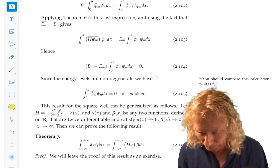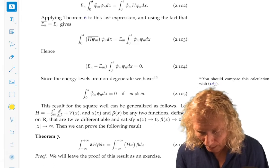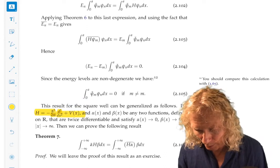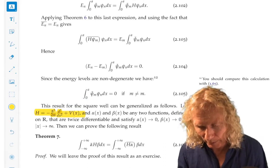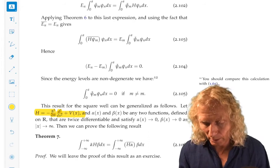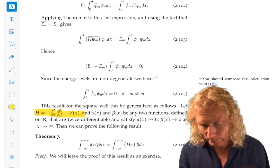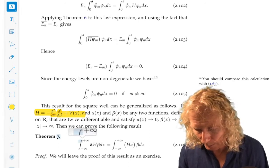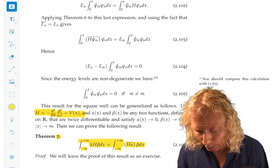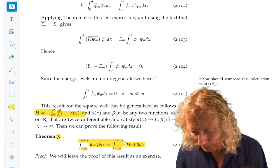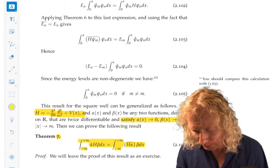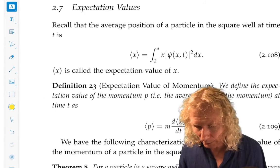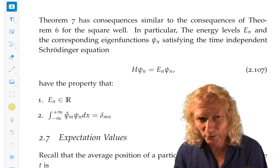Okay. Well, just like in the earlier result, we can prove a hermeticity result in the case we have Hamiltonian more general than square well, the kinetic energy part in operator form plus a potential. The same type of result holds. We need some assumptions on alpha of x and beta of x. And that's also left as an exercise.